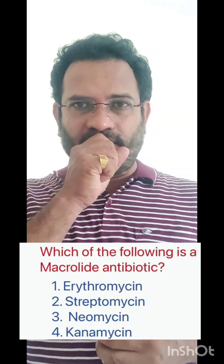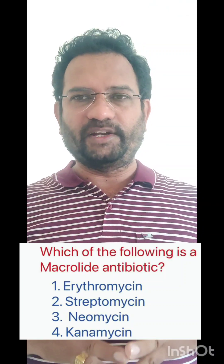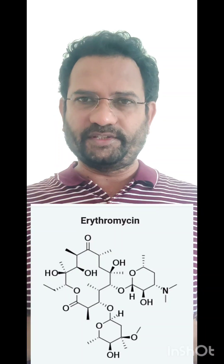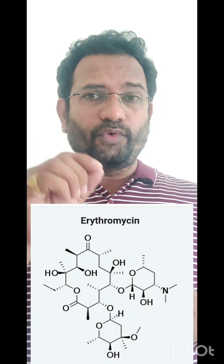The last question: which of the following is a macrolide antibiotic? Options given are erythromycin, streptomycin, neomycin, and kanamycin. Streptomycin, neomycin, and kanamycin all belong to one category called aminoglycoside antibiotics. The question is about macrolide antibiotics, and the answer is erythromycin. 'Macro' means big — erythromycin is made up of a 14-membered ring; it is a lactone derivative, a cyclic ester. The answer is option one, erythromycin. I hope this is useful — all the best.